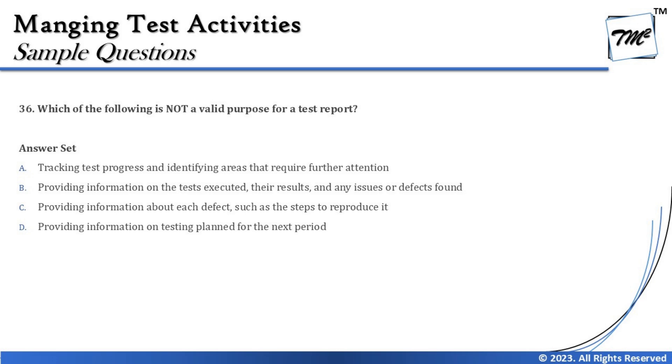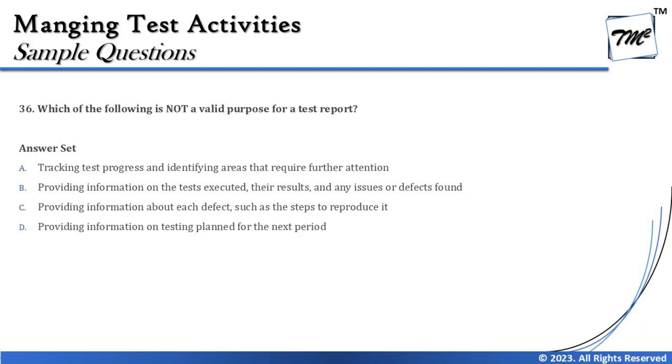The next question is number 36: which of the following is not a valid purpose for a test report? Test reports are written in two ways — test progress reports, created multiple times, and the test summary report, created once at the end, also called the test completion report. Since the question asks what is not true, the options can cover formality, audience, timing, and similar aspects.